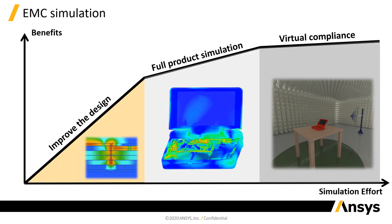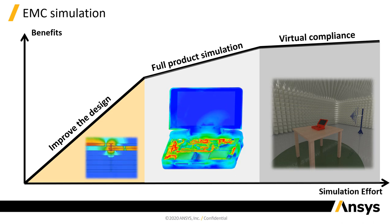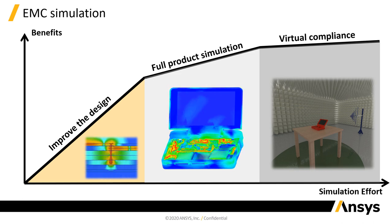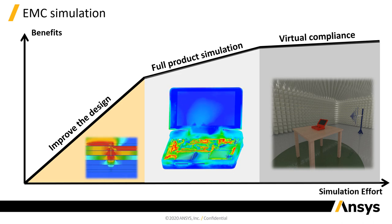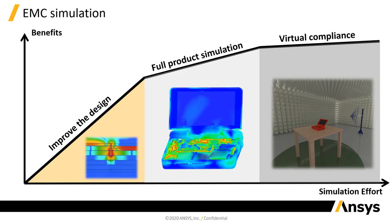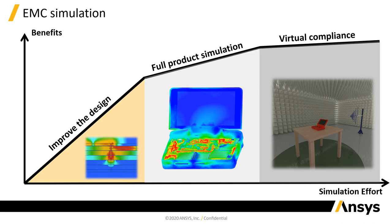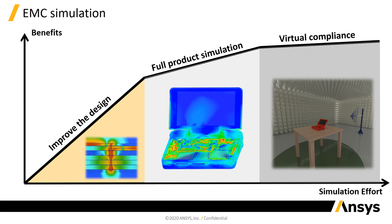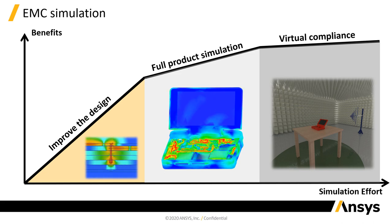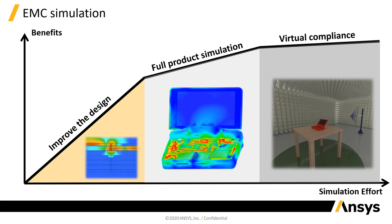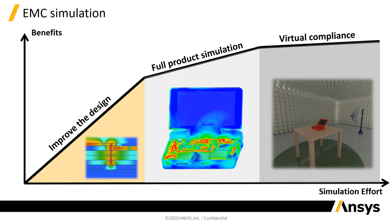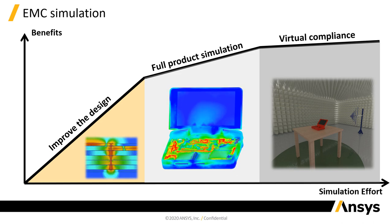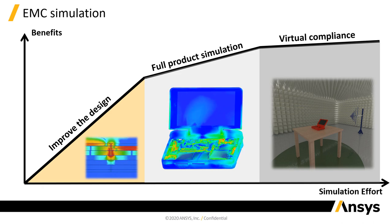We can use electromagnetic simulations at all stages during product development, with different benefits at each stage. When you are designing your product, the best time to use simulation is early because it doesn't require too much information and you can get a lot of benefits. For example, we have a back-drilling via animation — we can optimize transitions, PCB layout, and many design elements to solve signal integrity, power integrity, and EMI problems.